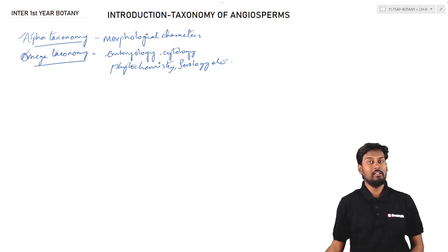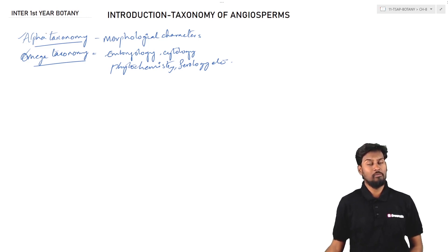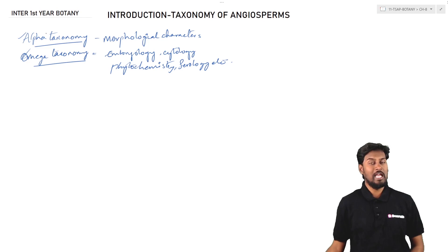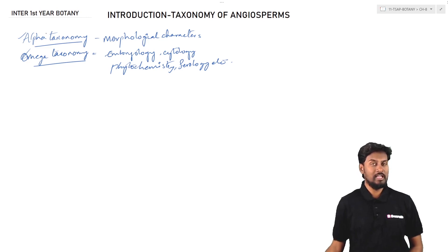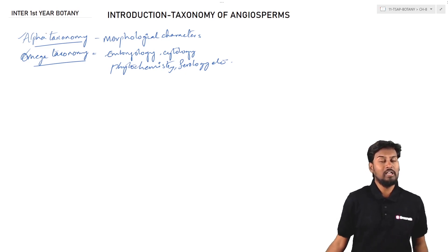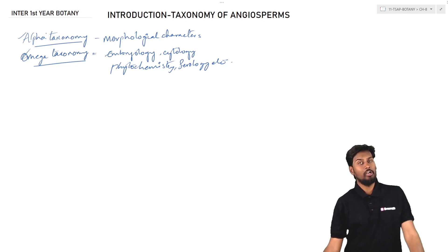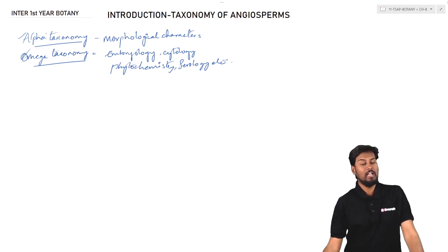Alpha taxonomy is a very primitive kind of taxonomy. In case of omega taxonomy, it is beyond the morphological characters. It considers the significance and meaning of morphological characters gathered in a particular order. For example, it includes embryology, serology, cytology, and phytochemistry — different branches which help place organisms in a particular order.